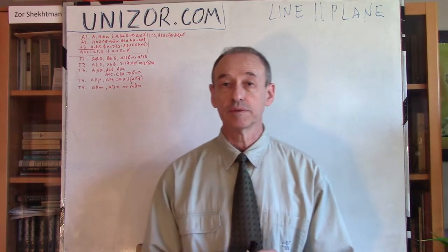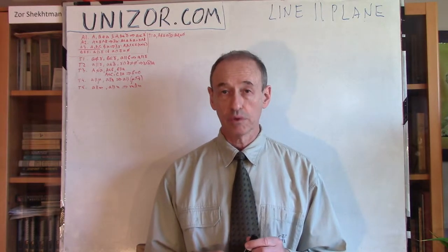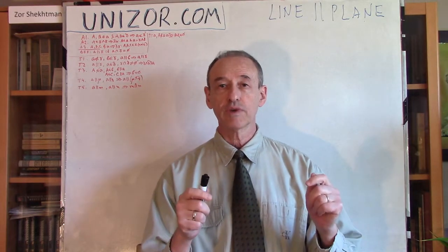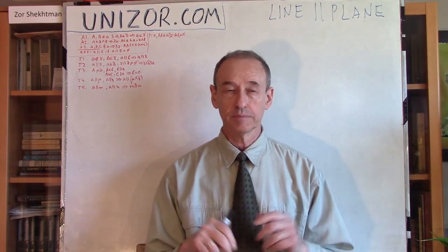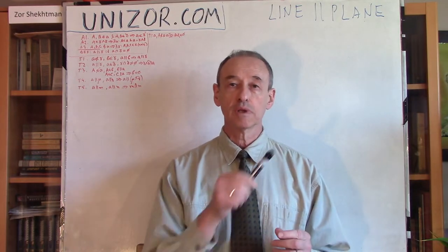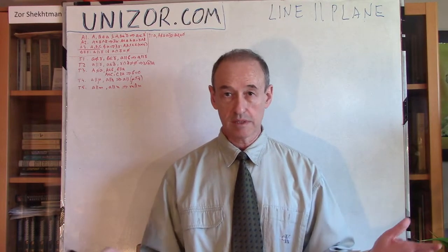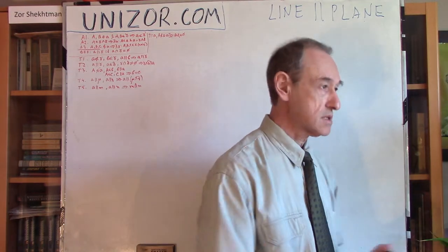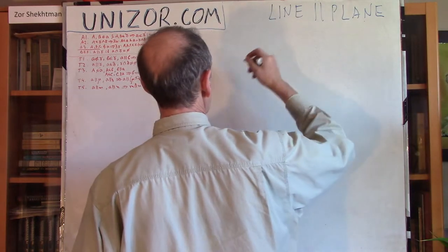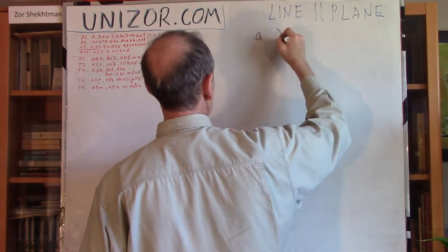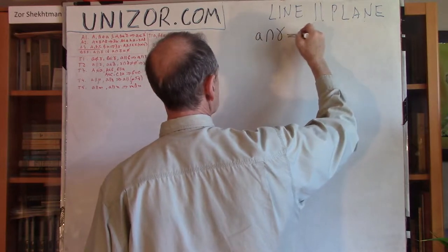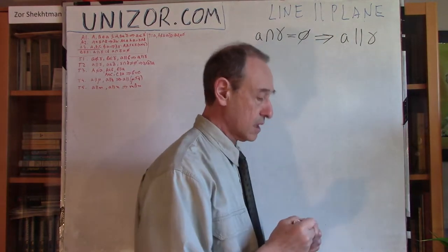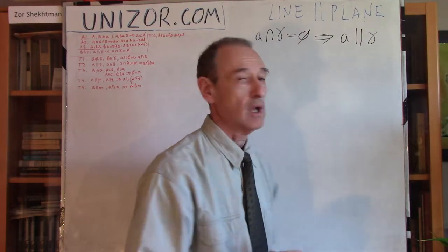Let me go straight to the definition. The previous lecture was about the parallelism of two lines — two lines are parallel in three-dimensional space if, number one, they do not have common points, and number two, they are in the same plane. Now, what about a line and a plane? The parallelism between a line and a plane is even simpler: just no common points. As long as the intersection between line A and plane gamma is empty, A is parallel to plane gamma by definition.